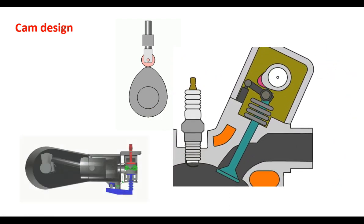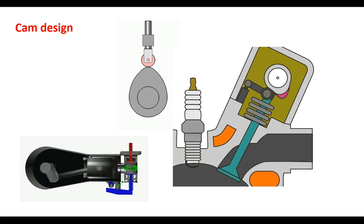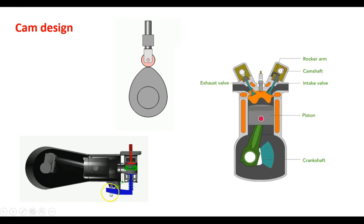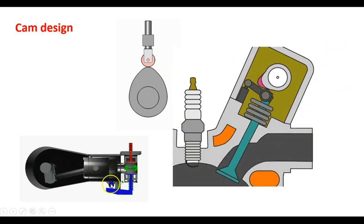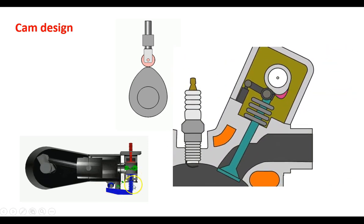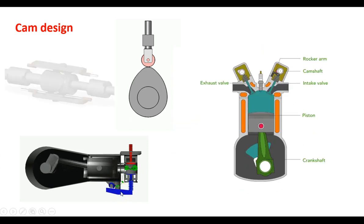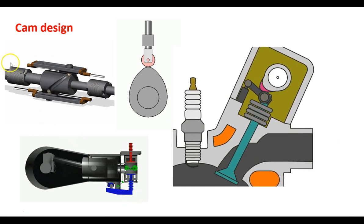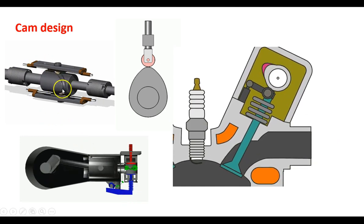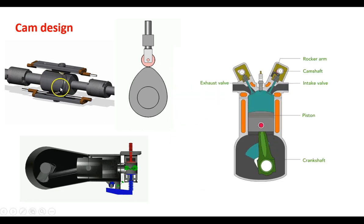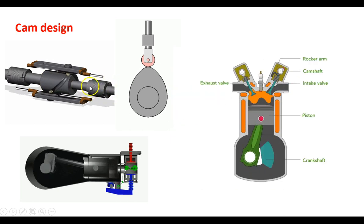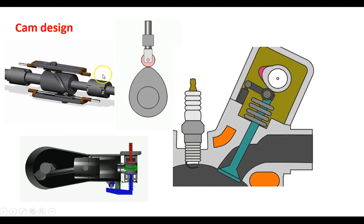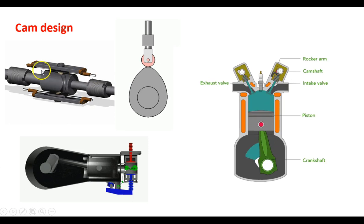Cams come in all sorts of different configurations. You've got a different type of cam design down here at the bottom — a cam rotating and opening and shutting valves on a rocker — and then you've got this totally different type of cam where the motion is a groove that's rotating and causing a linear motion that goes parallel to the axis of motor rotation.